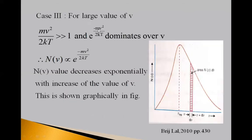Case third, for large value of v, mv square upon 2kT is very very greater than 1 and e raised to minus mv square upon 2kT dominates over v here in this case. So, N(v) is proportional to e raised to minus mv square upon 2kT. So, this N(v) value decreases exponentially with increase in value of v.